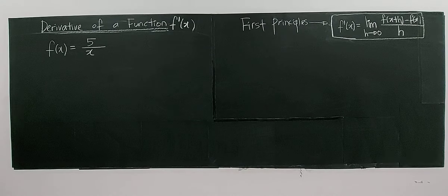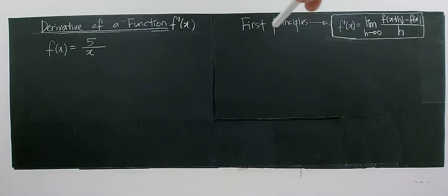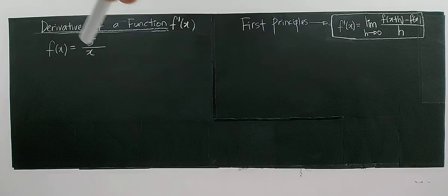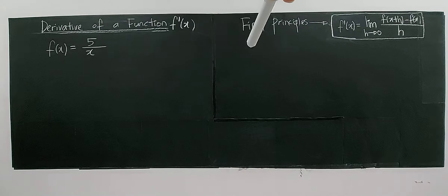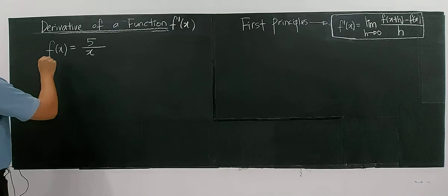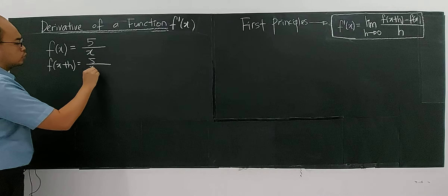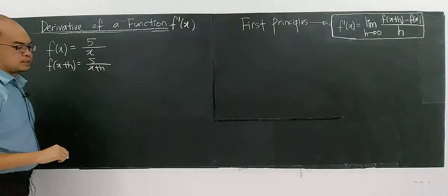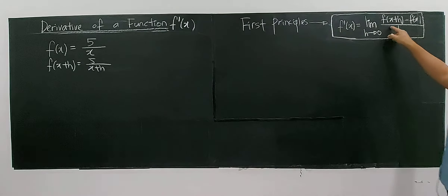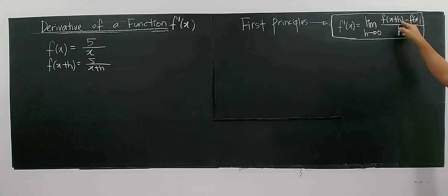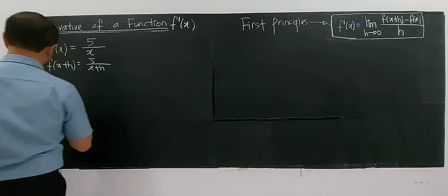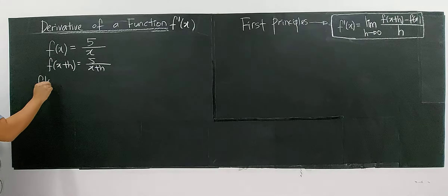Let's continue with this example. We are finding the derivative of a function by using the first principle. For this function, I have to use the first principle. To find the derivative, you need to find f(x+h), so I'm going to replace x with x+h, as required by the formula.